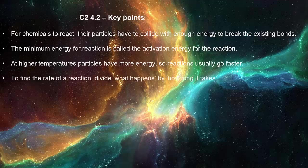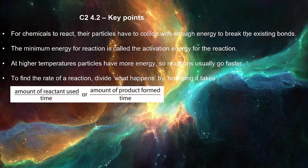To find the rate of a reaction, divide what happens by how long it takes. Amount of reactant used divided by time, or amount of product formed divided by time.